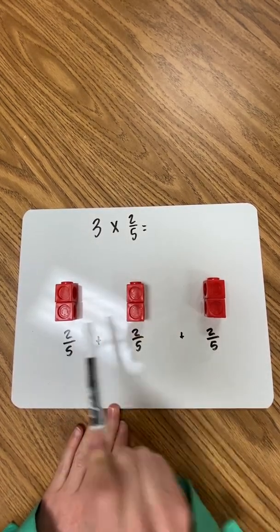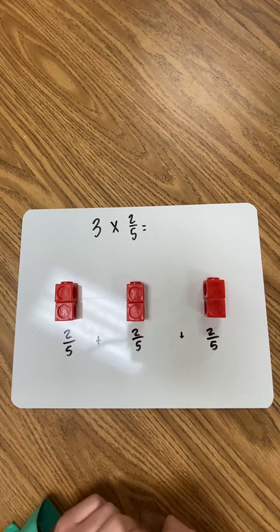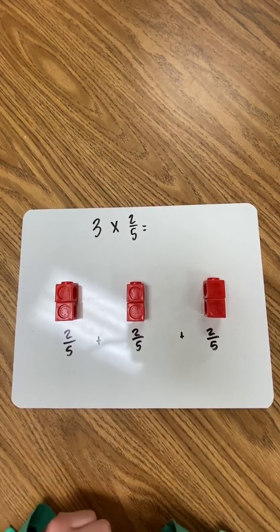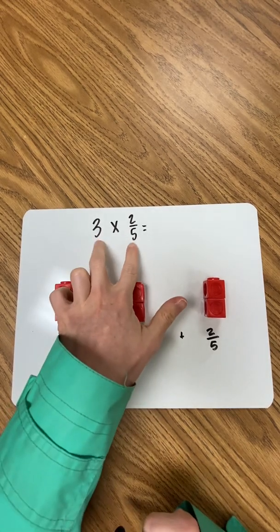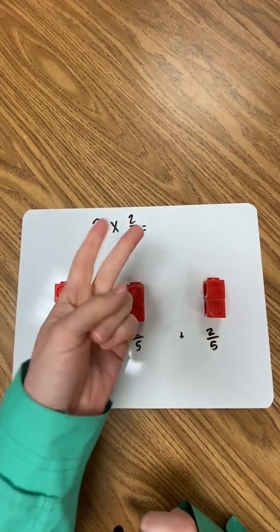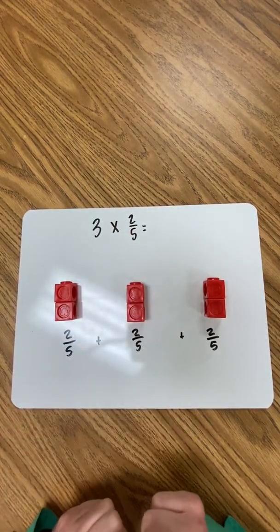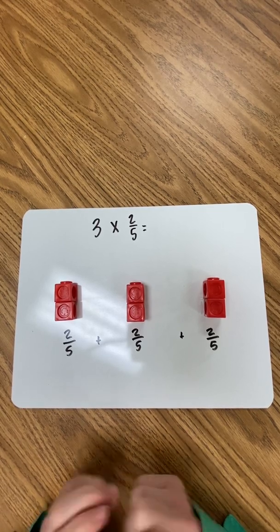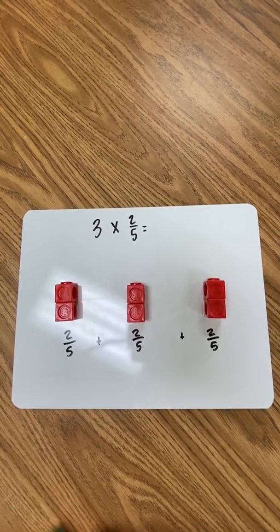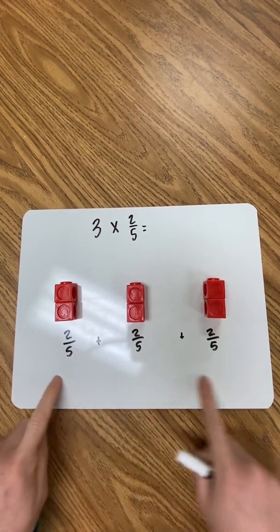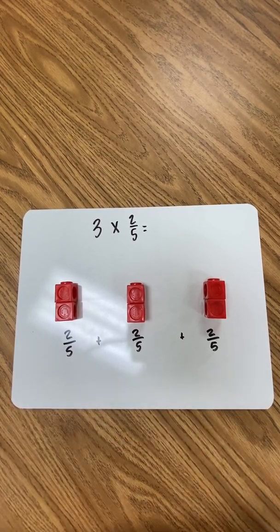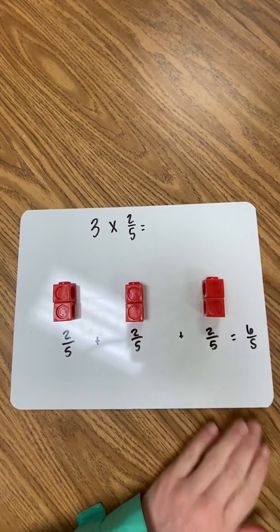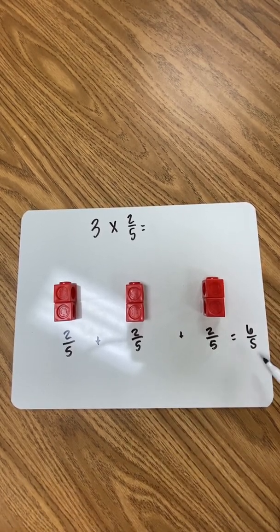Students make the connection that multiplication can also be solved using repeated addition — two-fifths plus two-fifths plus two-fifths — showing three groups of two-fifths. It's also important to talk about how multiplication has the commutative property, so the factors can be flipped and written as two-fifths times three, meaning the same thing.